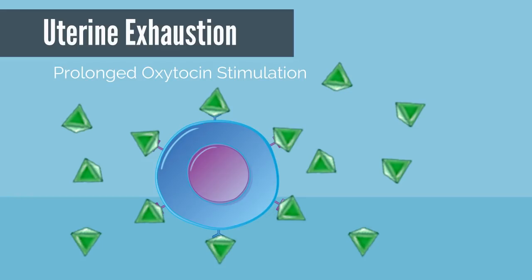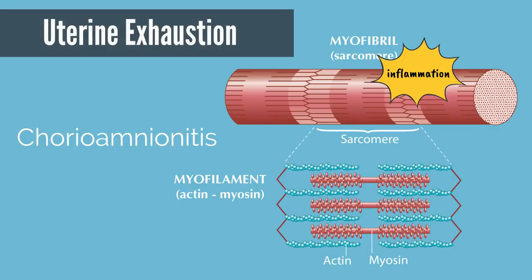Repeated exposure to oxytocin leads to oxytocin receptor desensitization and a loss in capacity to respond. The pathophysiology of chorioamnionitis leading to uterine atony is not well understood, but likely inflammation leads to dysfunctional myometrial contractility. It is hypothesized that the inflammatory process consumes energy otherwise available for uterine smooth muscle contraction, and that cytokine-induced nitric oxide production inhibits mitochondrial energy production and impairs contractile function in myocytes.